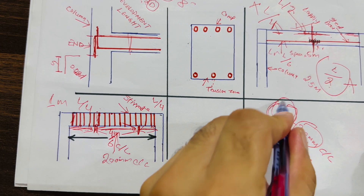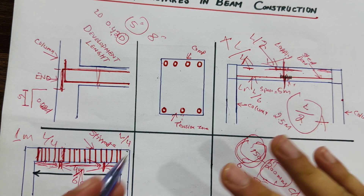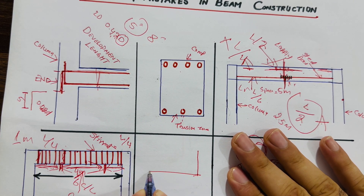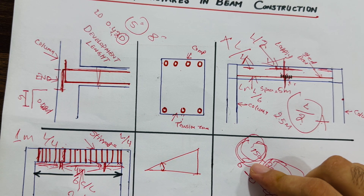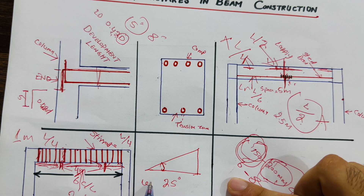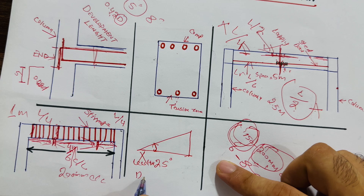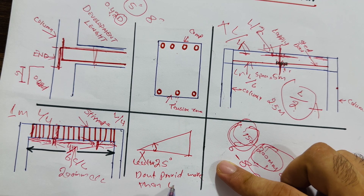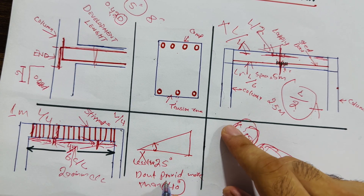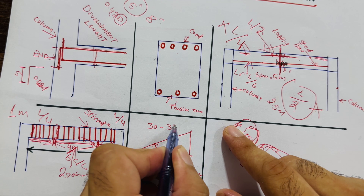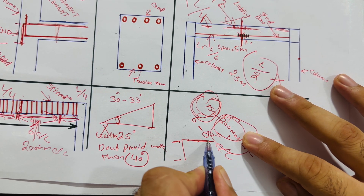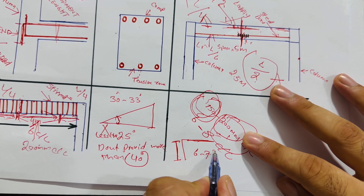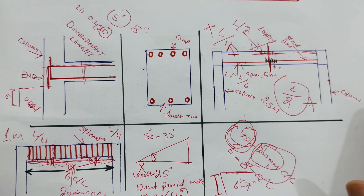For staircases, don't provide an angle less than 25 degrees or more than 40 degrees. For normal residential buildings, 30 to 33 degrees is recommended as the best angle. The riser height should be kept between six and seven inches. This is the best design for a staircase.